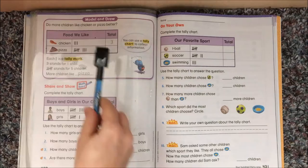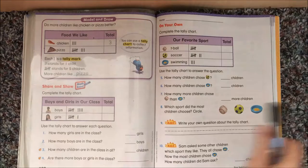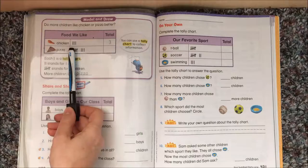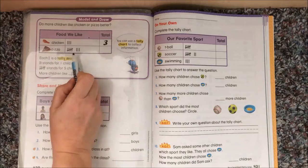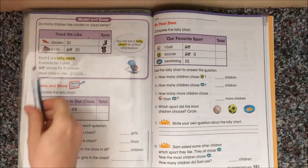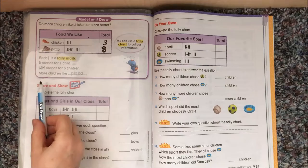To the next page. Model and draw. Do more children like chicken or pizza better? And let's look. There are how many tallies for chicken? 3. So they wrote a 3. We can trace it. How many tallies for pizza? Well, this is 5. Next comes 6, 7, 8, 9, 10. Each line is a tally mark. It stands for one child. A set of tallies stands for five children. More people like what? Pizza.